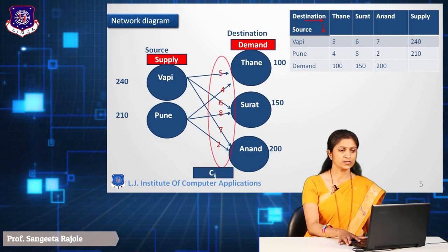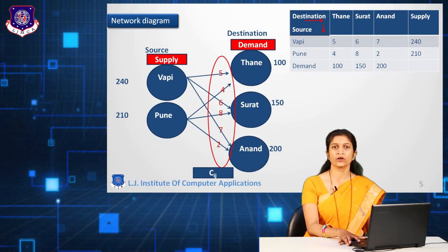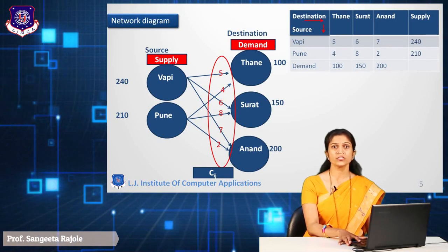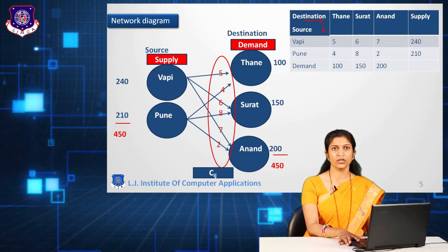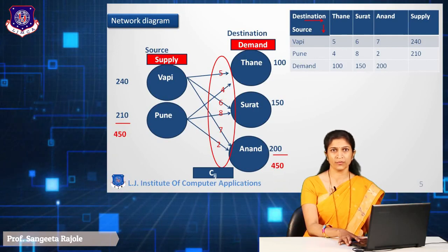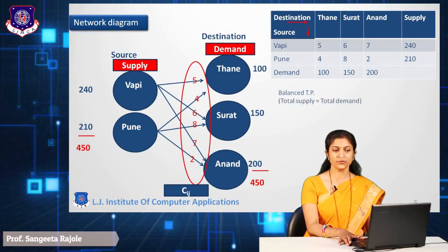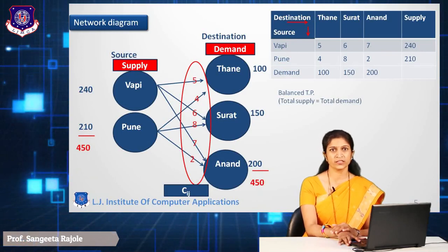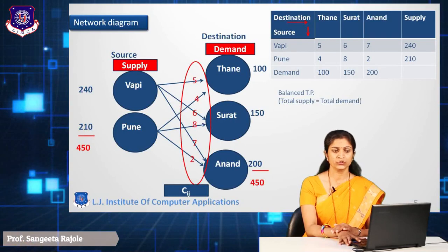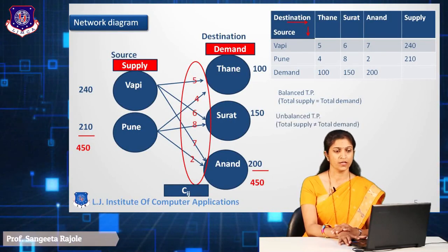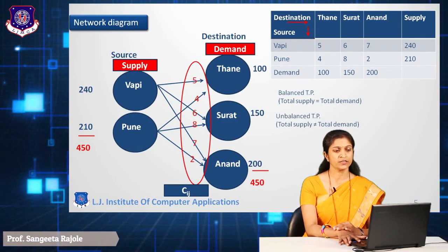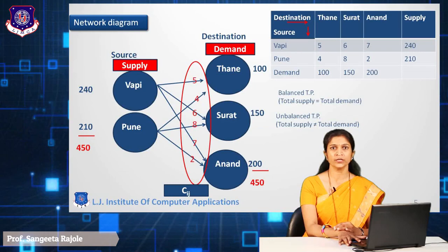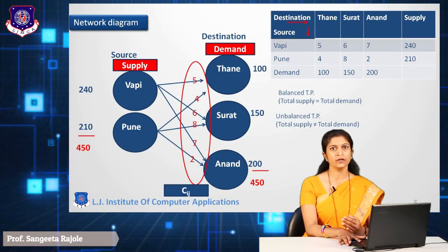The circled values are called c_ij, which is the cost per unit from source to destination. Now, if the total supply equals the total demand, such a problem is called a balanced transportation problem. In the balanced transportation problem, total supply equals total demand. Another type, which occurs in real-life situations, is the unbalanced transportation problem, where total supply is not equal to demand — either supply is greater or demand is greater.